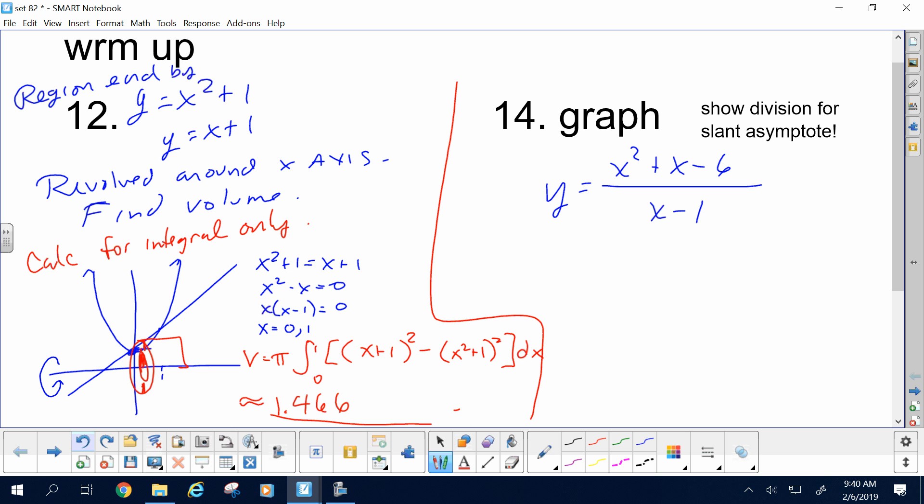14 is rational functions, which we did in set 80. This requires a little bit of practice. So we're supposed to graph this thing. We could do all the normal stuff first, like the holes and the x-intercepts and the vertical asymptotes. So we might want to factor this first. How does the numerator factor? x plus 3 and x minus 2. Do I have any holes in this problem? No, there's no common factors, so there's no hole. What do the top zeros indicate in the graph? Zeros.